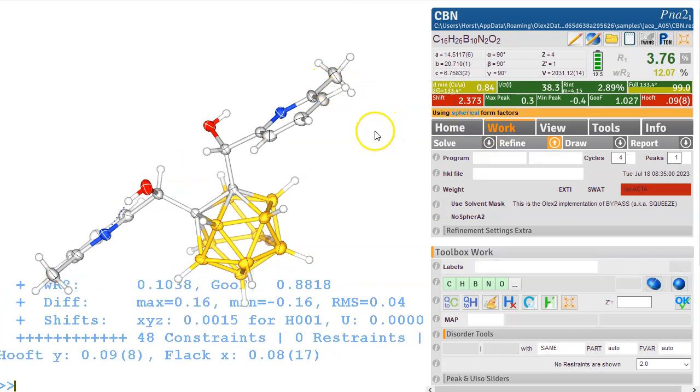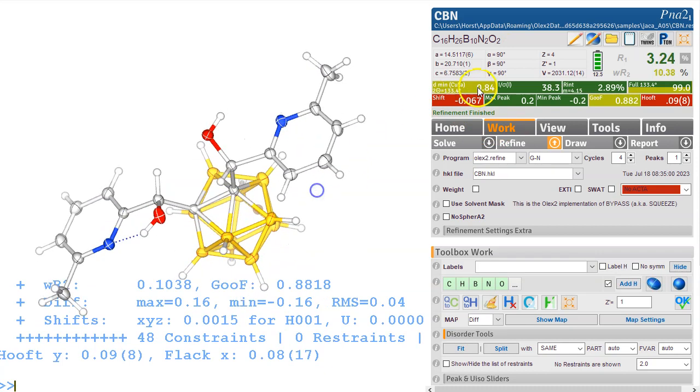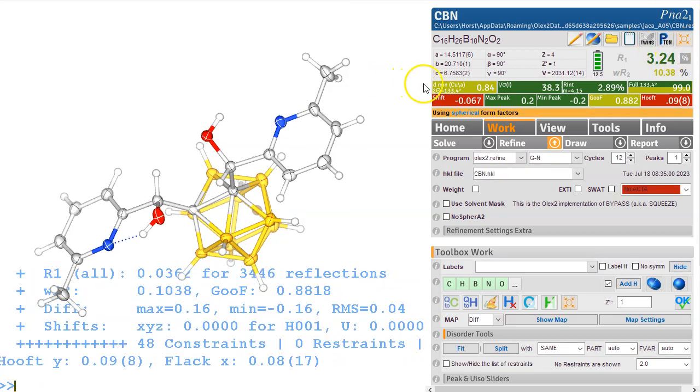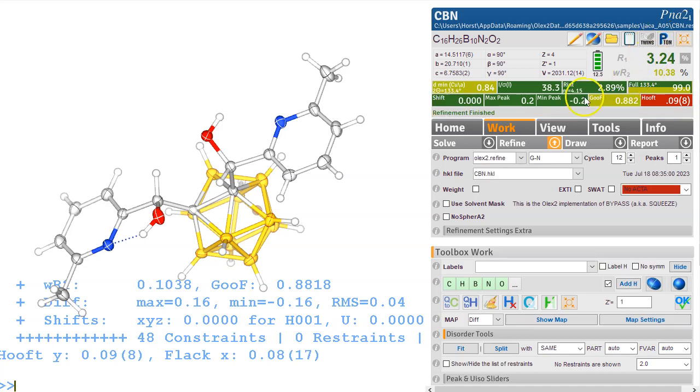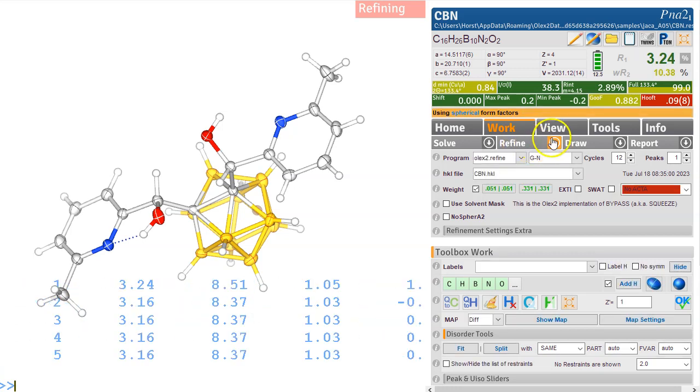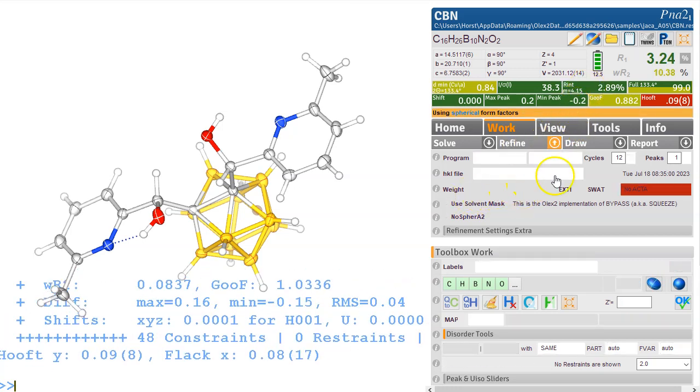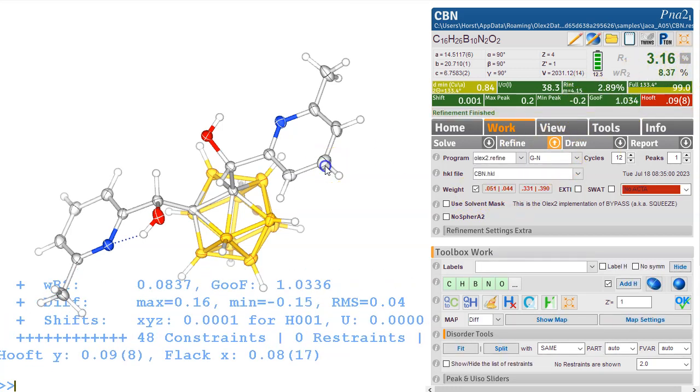So let's have a look at it. So it's not much movement. Let's do refine. Let's use 12 cycles. And then it should hopefully settle. What else have we got here, the weighting scheme needs to be switched on. We haven't done this. Goodness of fit is 0.88, is not bad. But of course, the weighting scheme we should always try to switch on and see. It always makes a bit of a difference, especially to WR2, of course.